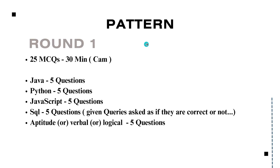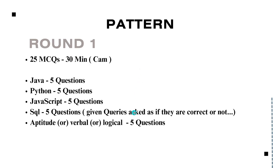Coming to round one: total 25 MCQs, 30 minutes, and CAM should be non-conditioned. There are 5 Java MCQs, Python MCQs, JavaScript MCQs, and SQL. For SQL, they have given some queries and asked whether they are correct or not — like true or false. The last section is either aptitude, verbal, or logical questions. Each individual got different questions. This round is simple to medium level.